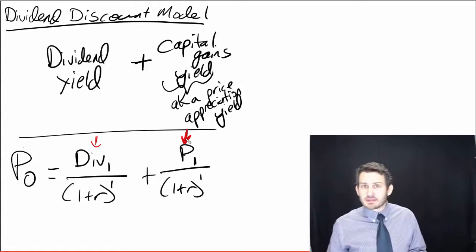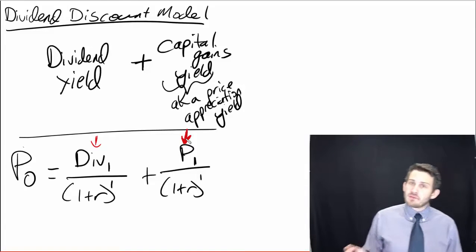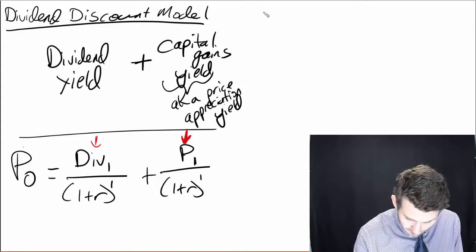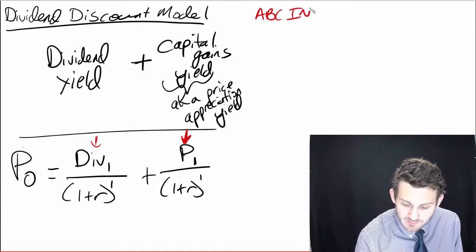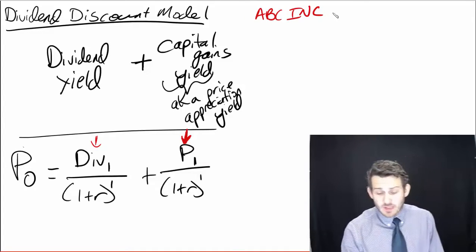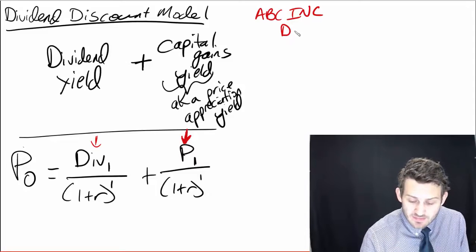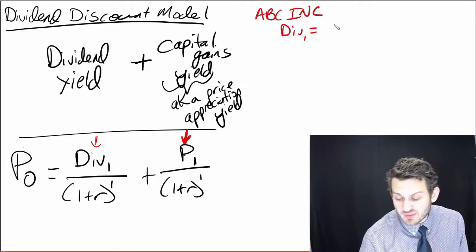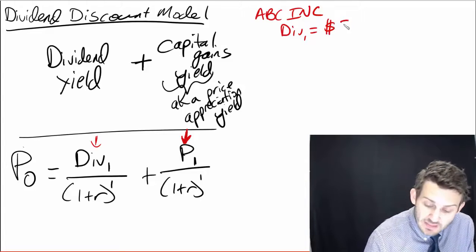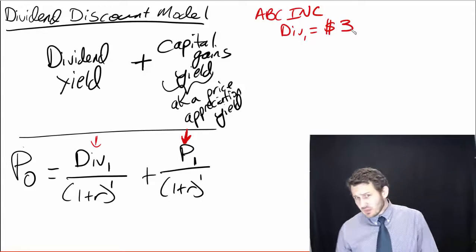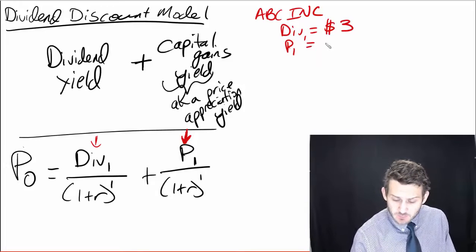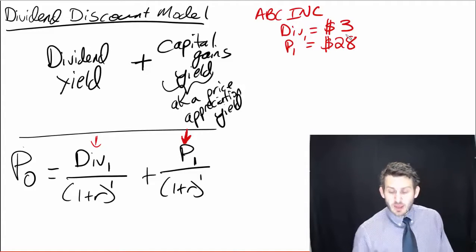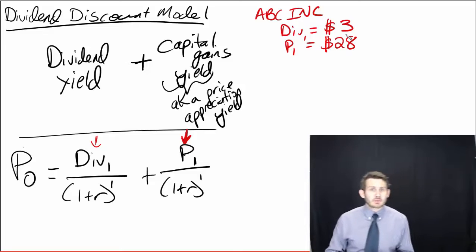So we can take a basic example here. We have this company, say ABC Incorporated. We have ABC Incorporated, and we're estimating ABC Incorporated is going to be paying a dividend next year in the amount of, say, $3. And we did some analysis, and we said our price next year is going to be $28, and we say that's what our expectation is.